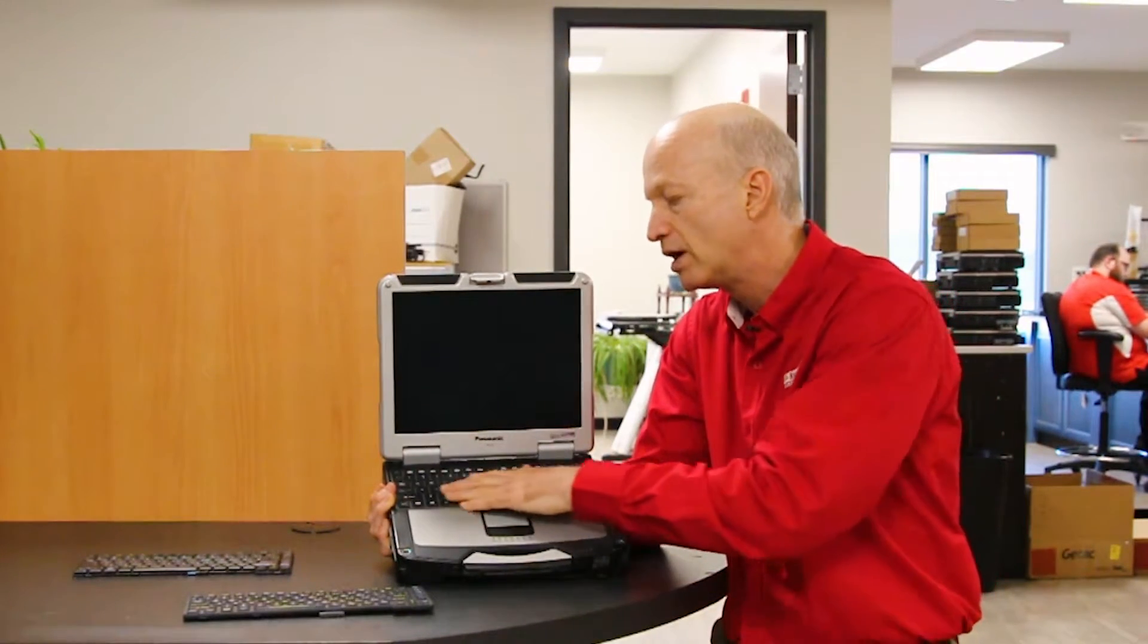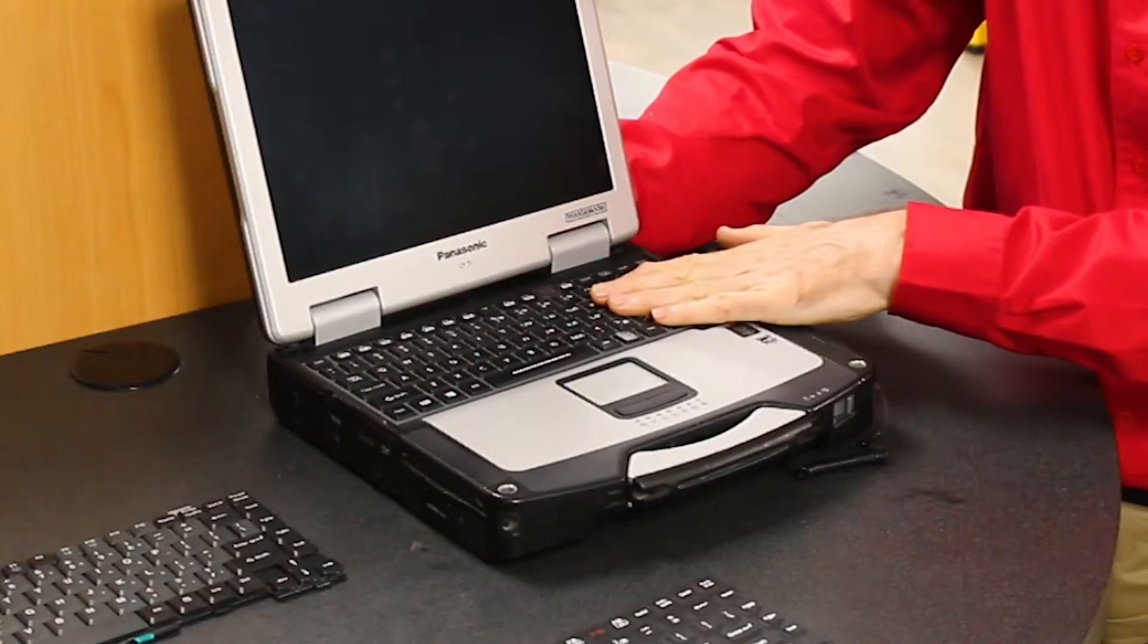Now on the 31, the backlight is only white, you only get a white light on this one. Newer models like on say the FZ-40, you can pick your color and you can even create your own color of what you want the backlight to be. And that's the backlit keyboard, so it's a little bit better, a little more resistant to water and dust.